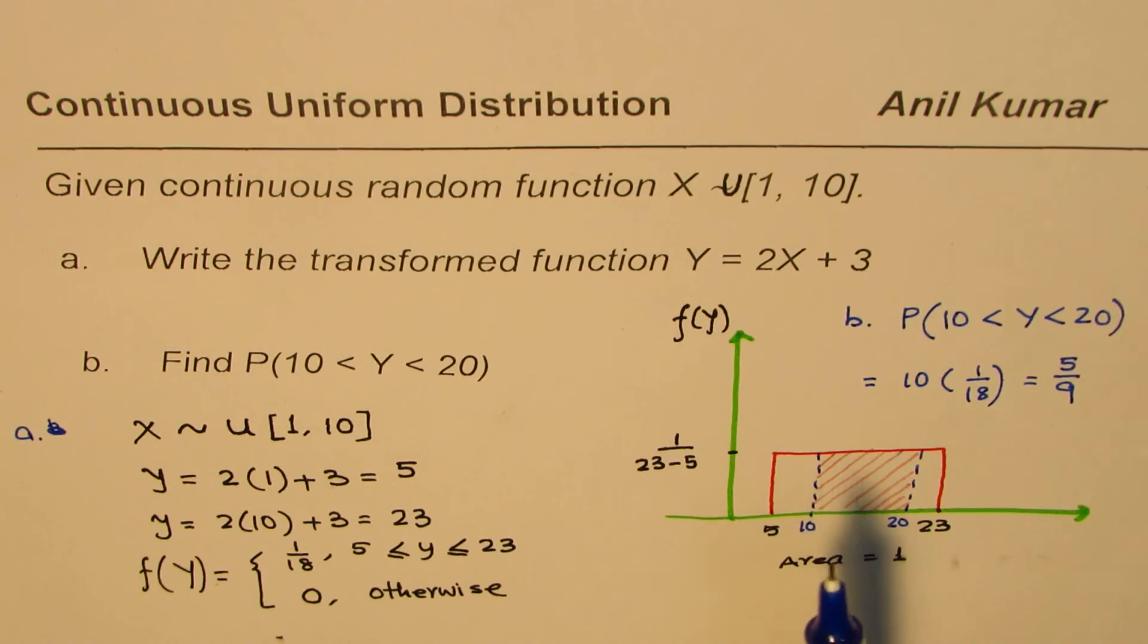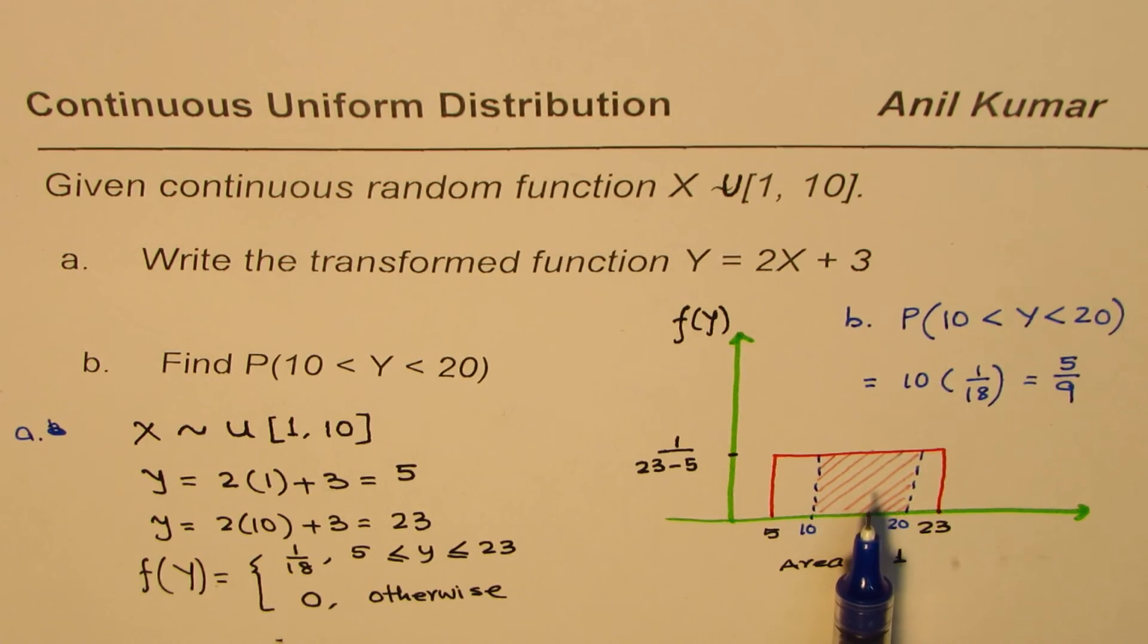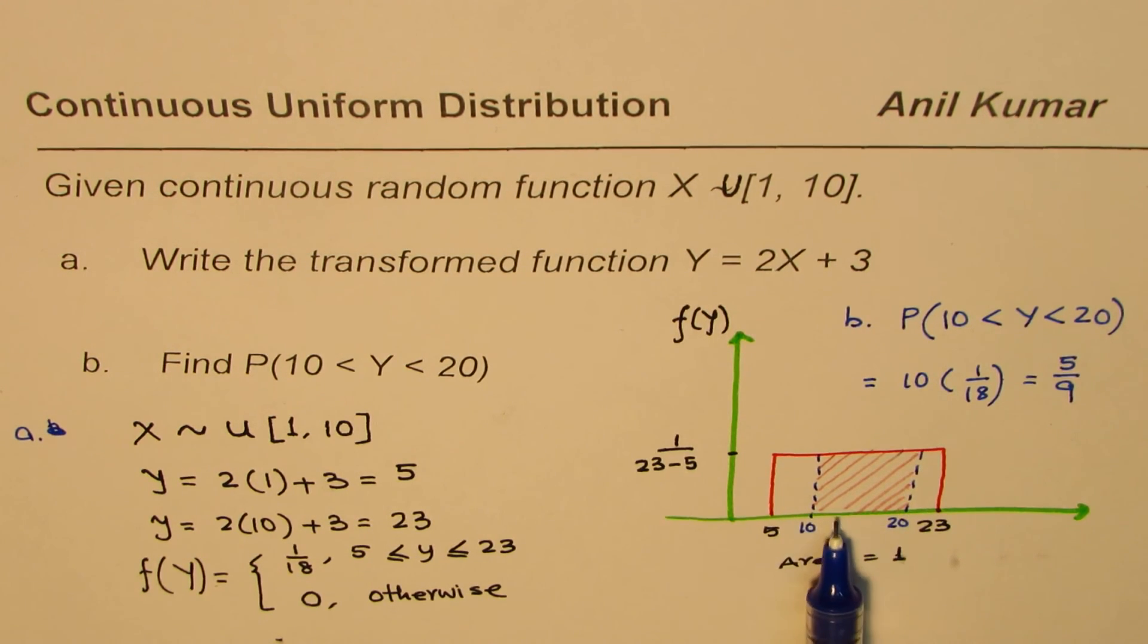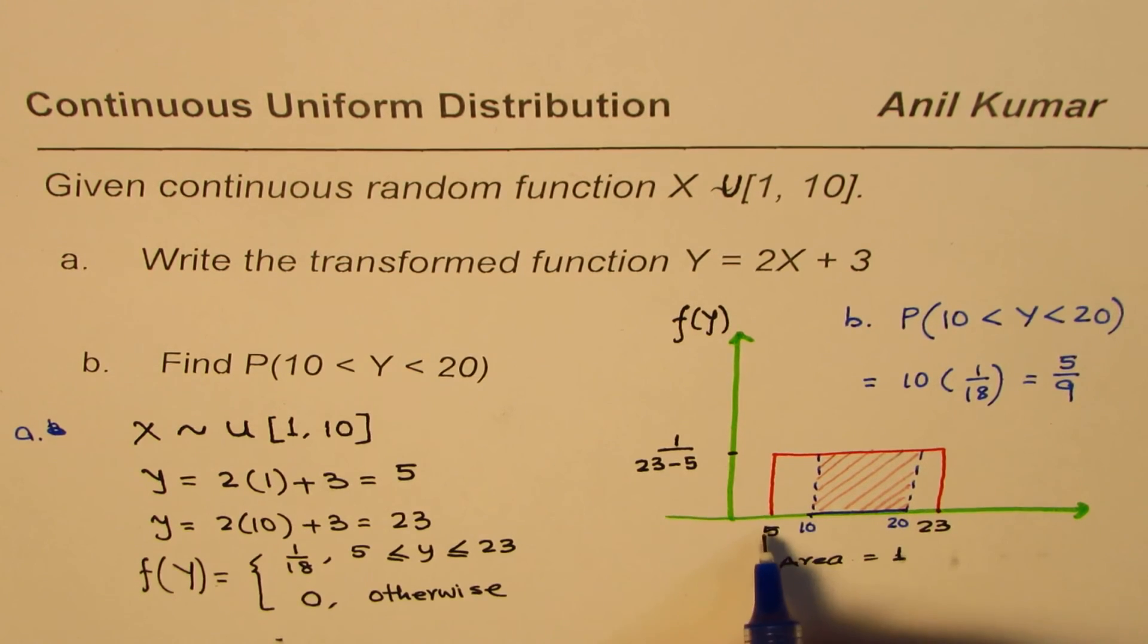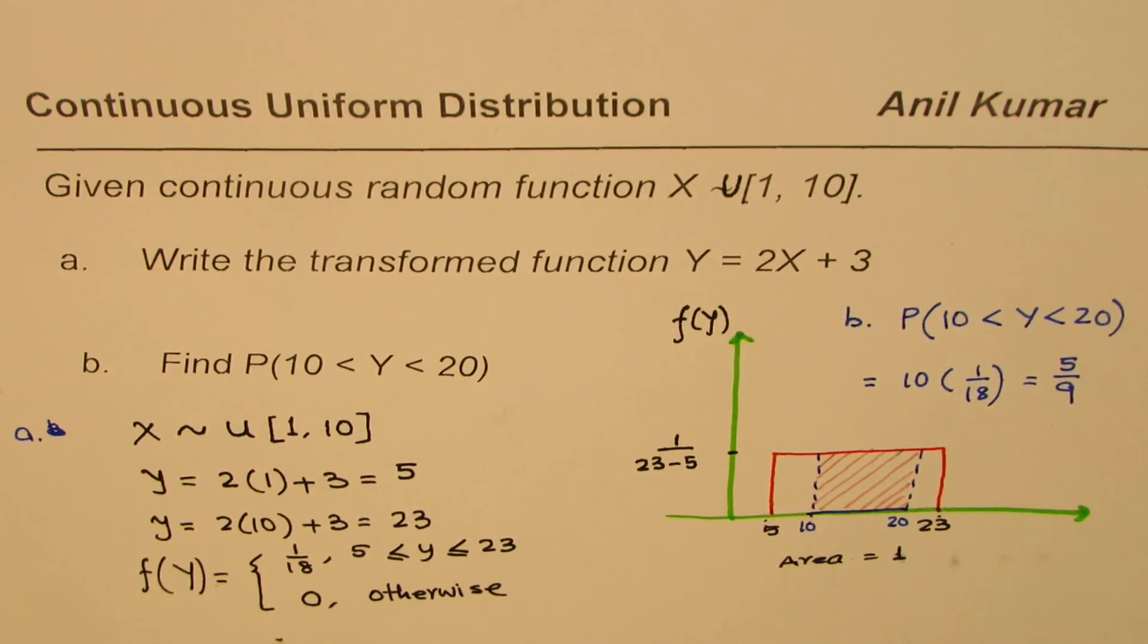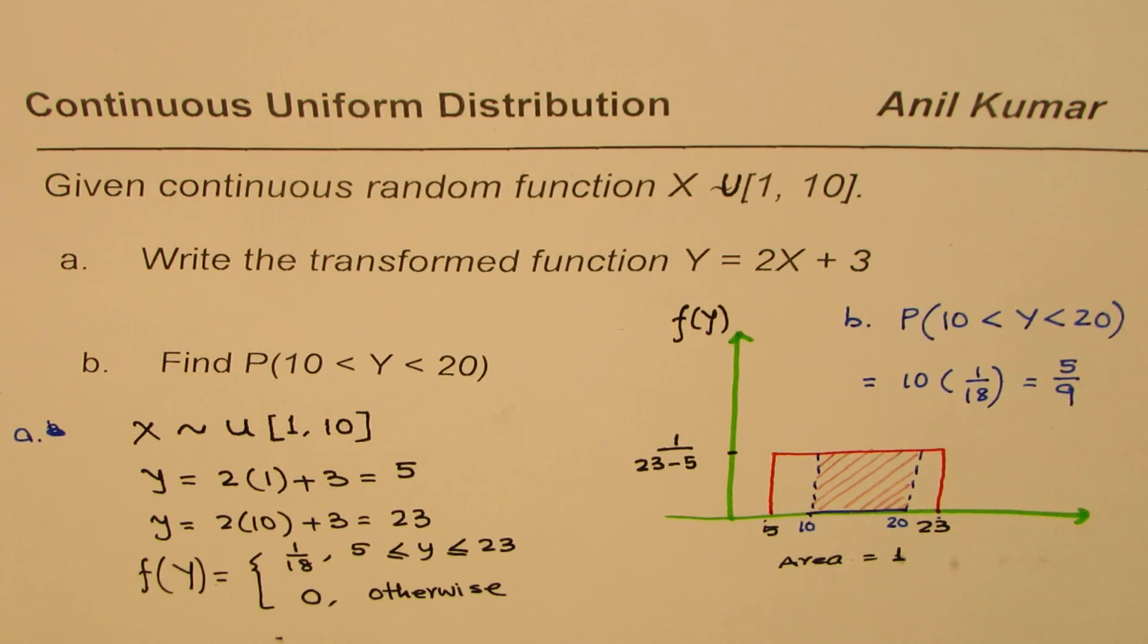In this particular case, you can see, it is the ratio of the area between the two, or you can also say it is a ratio of 10 over 18, right? So ratio of 20 minus 10 divided by 23 minus 5. So that is the direct way of finding it out. I hope that helps. I'm Anil Kumar. You can always share and subscribe my videos. Thank you and all the best.